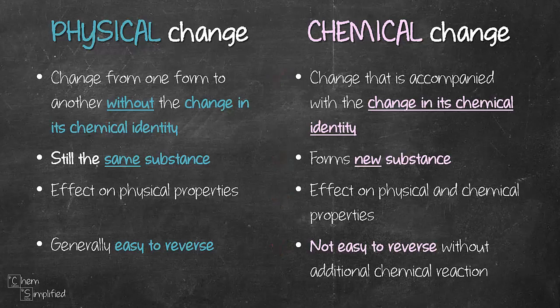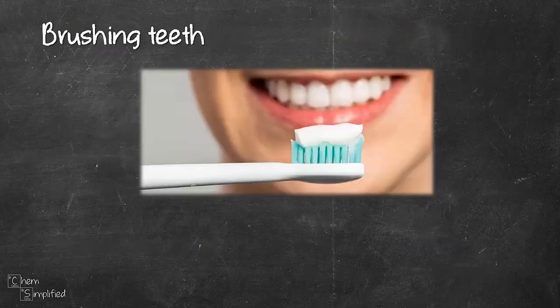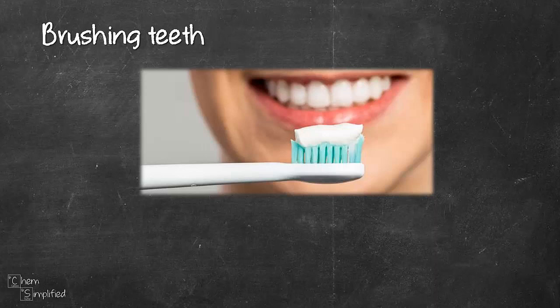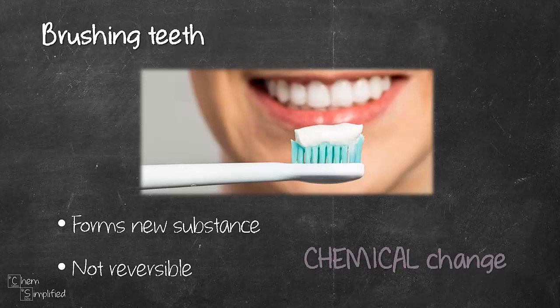Let's go through some of the things I did this morning and classify them as physical or chemical change. The first thing I did this morning after waking up was brushing my teeth. Now my toothpaste has fluoride ion in it. So when I brush my teeth, the fluoride ion in the toothpaste changed the chemistry of my teeth. And what that did was it strengthened my teeth and helped prevent future cavities from forming. So technically speaking, that forms a new substance on my teeth. Also that process is not reversible. So brushing teeth is a chemical change.